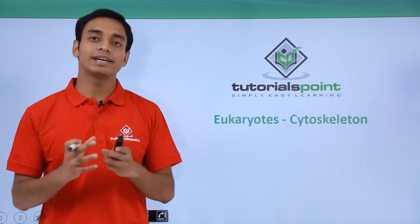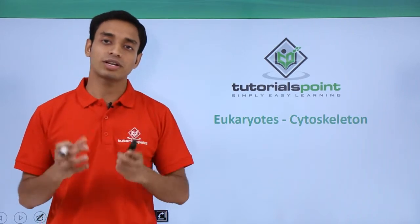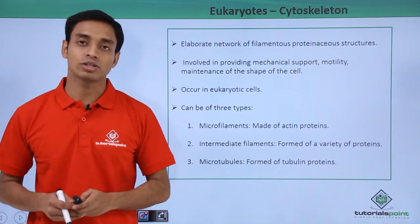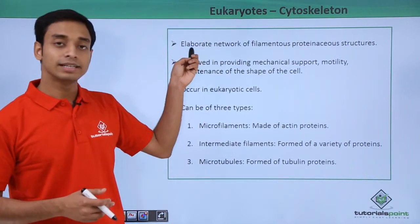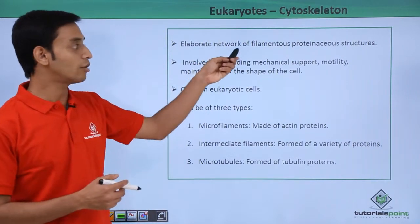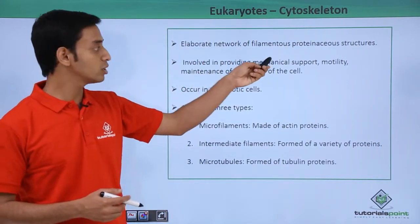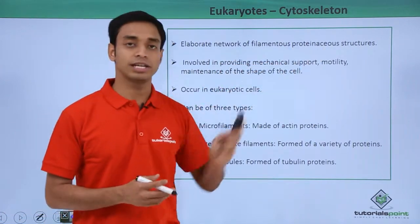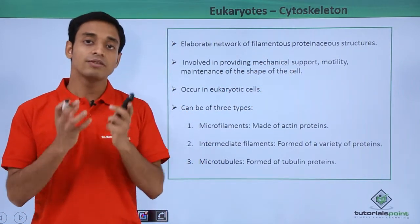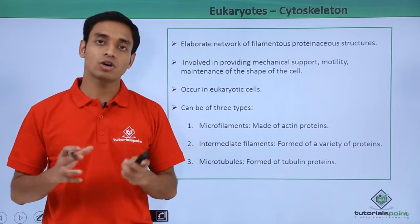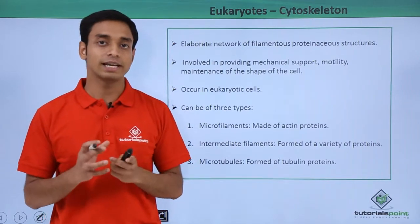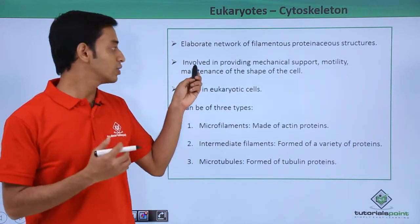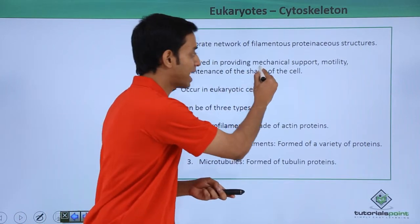So let's see what is the cytoskeleton. Cytoskeleton — these are elaborate networks of filamentous structures which are proteinaceous in nature. These are proteinaceous filamentous structures which are present all over the cell.